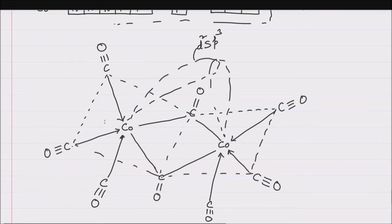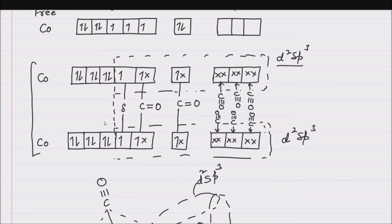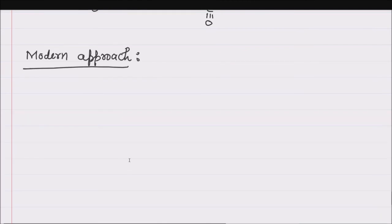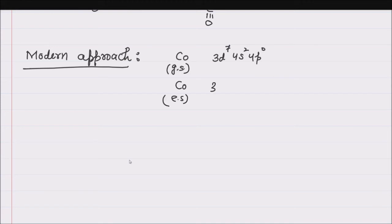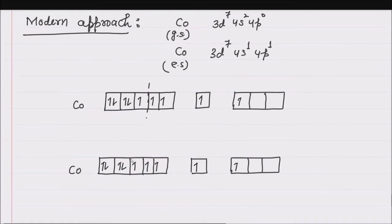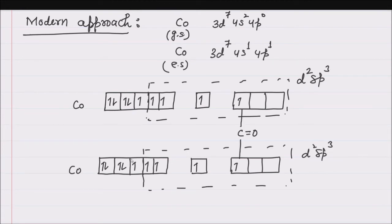This is as per the old theory. Now, as per the modern approach, the electronic configuration of cobalt in the ground state is 3d⁷, 4s², 4p⁰, and in the excited state it is 3d⁷, 4s¹, 4p¹. Each cobalt undergoes d²sp³ hybridization, and two singly filled d²sp³ hybrid orbitals overlap with the two bridging CO groups.